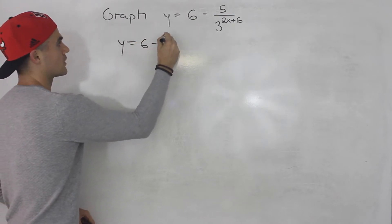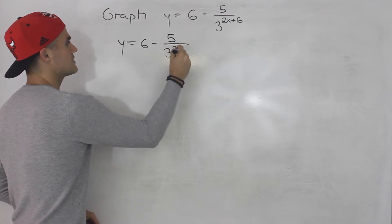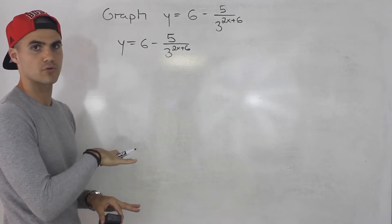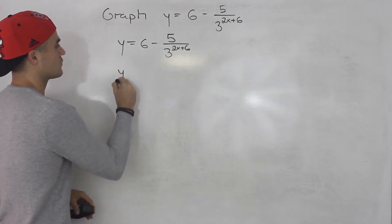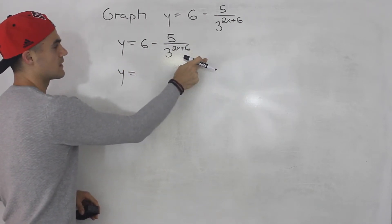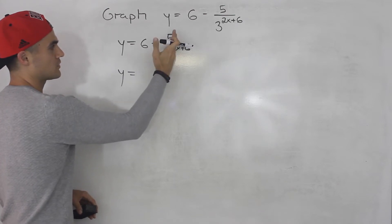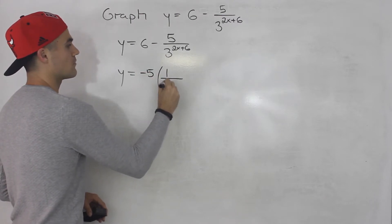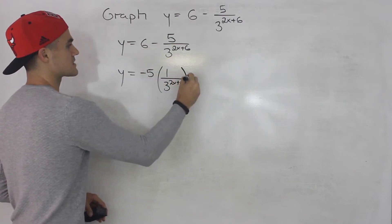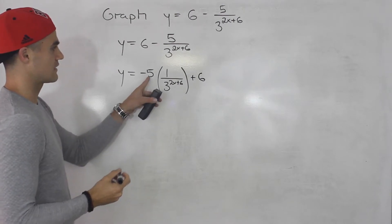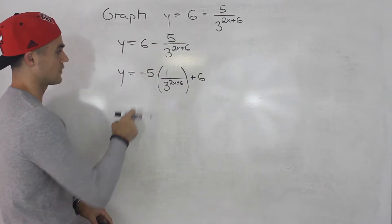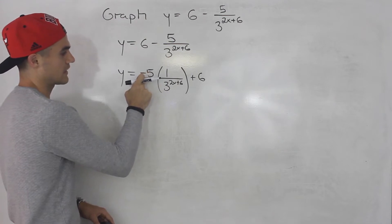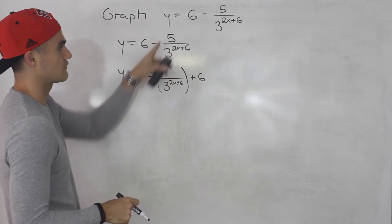We can rewrite and manipulate this algebraically so it looks like a standard exponential function, and then follow the same transformation process as before. First, I'll bring the 6 in front, then separate the negative 5 from the fraction — so we get negative 5 times (1 over 3 to the power of 2x plus 6), plus 6. Negative 5 times 1 gives us negative 5 in the numerator.